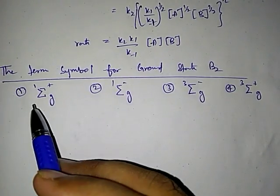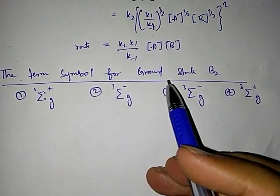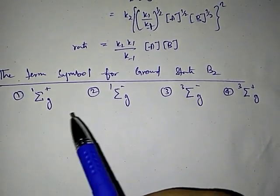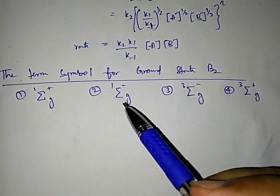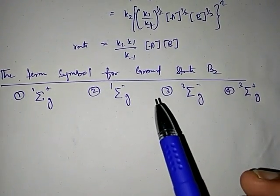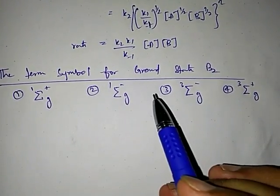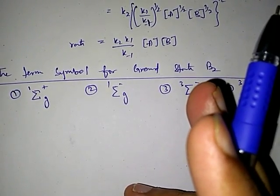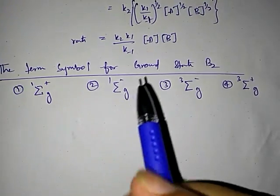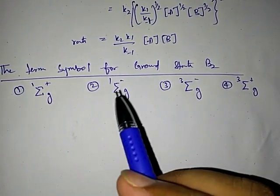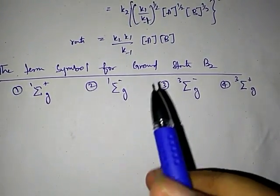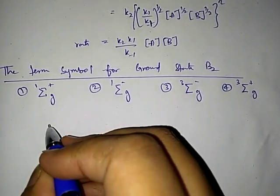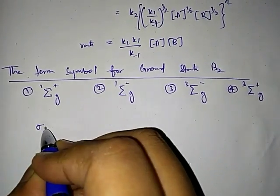The next question asks about the term symbol of the ground state of the B₂ molecule. If you watched my video on how to calculate the molecular term symbol, you would find this straightforward — it was covered directly. Two questions, one of two marks and one of three marks, were asked from that topic. Let's solve this now.